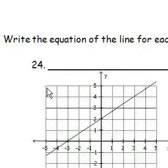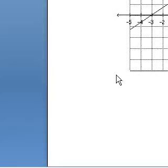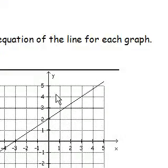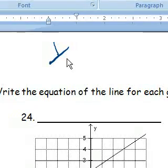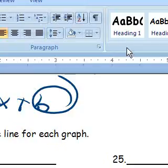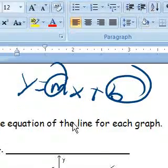And lastly, 24 and 25, we are almost done here. Write the equation of the line for each graph. Well, remember general form, y equals mx plus b, where b is our y-intercept and m is our slope.